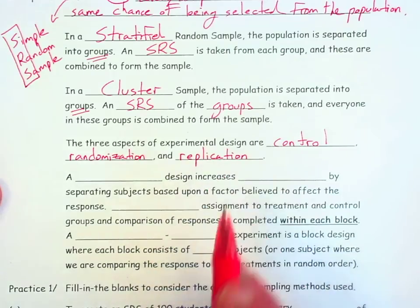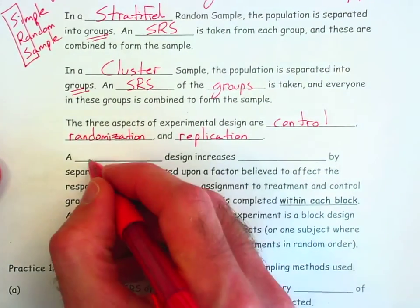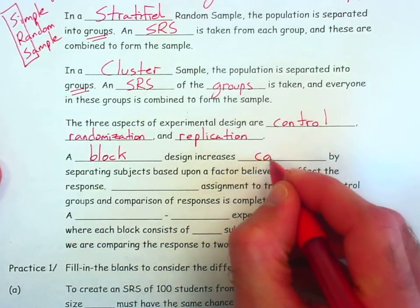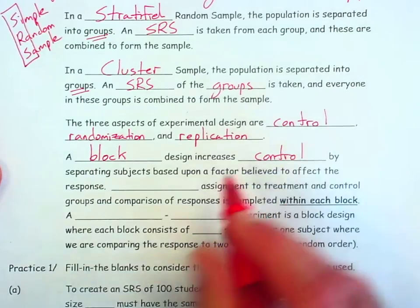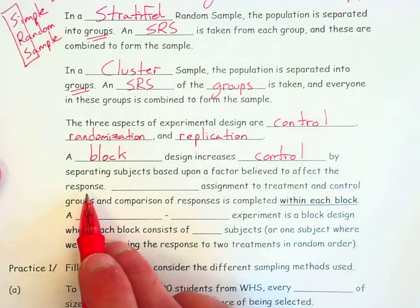A specific type of experimental design I would want you to be familiar with is a block design. A block design increases control by separating subjects based upon a factor believed to affect the response.